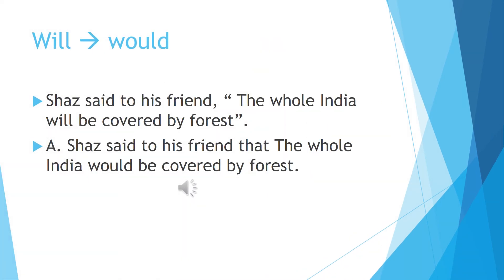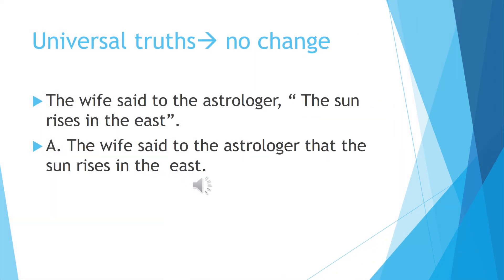Here we have an example for the third rule in the future tense, where 'will' becomes 'would'. Shaz said to his friend, 'The whole India will be covered by forest.' This is the direct speech. The indirect speech is: Shaz said to his friend that the whole India would be covered by forest. Only 'will' has changed for the sentence which was in the inverted commas.